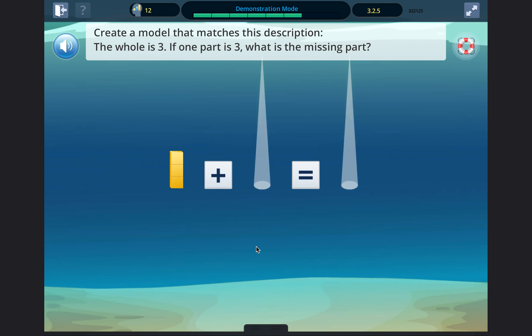Create a model that matches this description. The whole is three. If one part is three, what is the missing part?